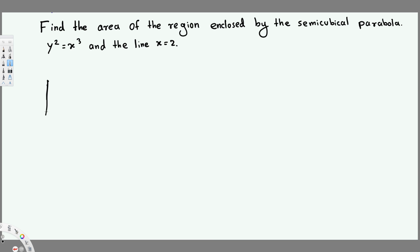So here the graph is going to look like this. We are going to have a cubical line so this is going to look like this, right, y² = x³. And then we have a line x = 2, so let's say this is that line, 2 and 0.